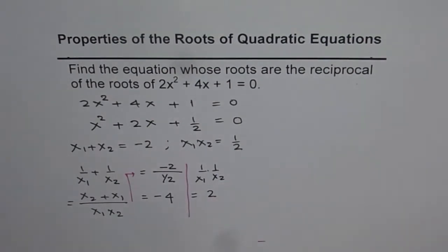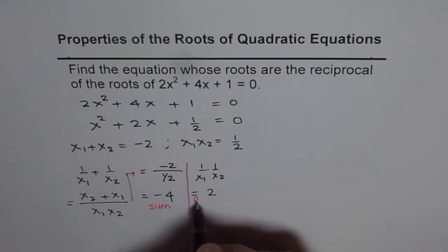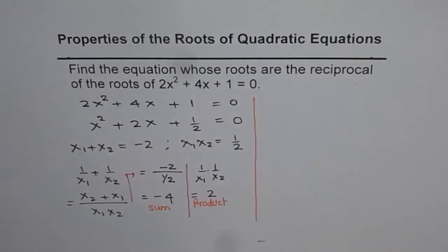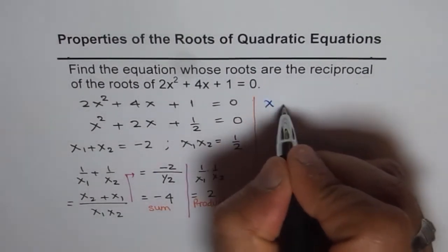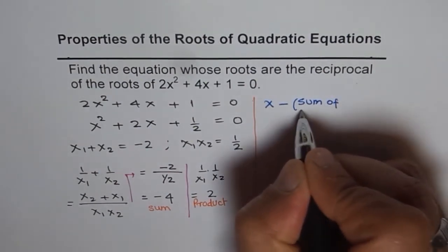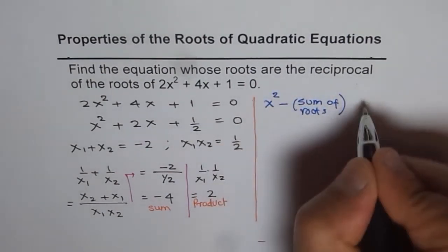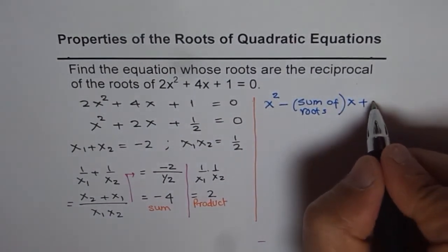So what we get here is sum as -4 and product as 2, and therefore we can write down our equation. The equation will be given as x² - (sum of roots)x + product = 0.